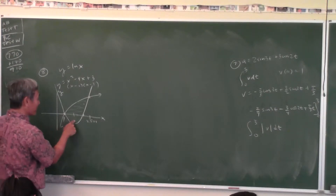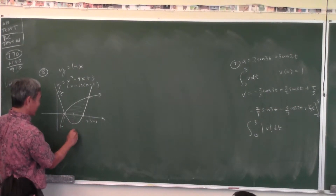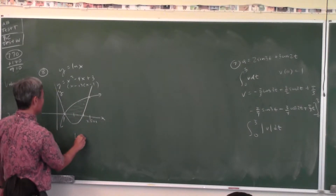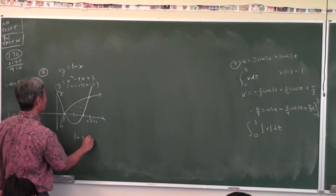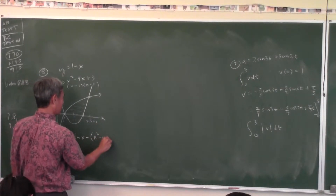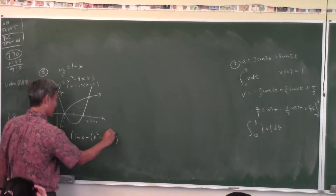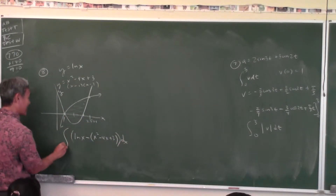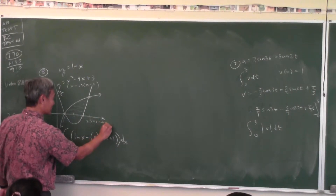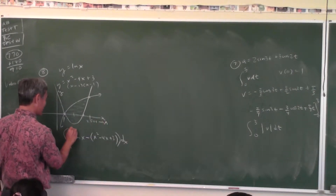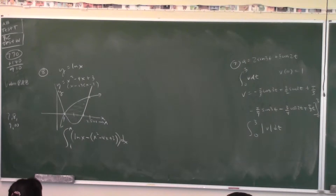So how do you compute this area? Top minus bottom. Which one's on top? y equals natural log x minus (x squared minus 4x plus 3). Please put the parentheses there. Multiply by dx, add it up from 1. I'm going to store this into A — you can just put A there.